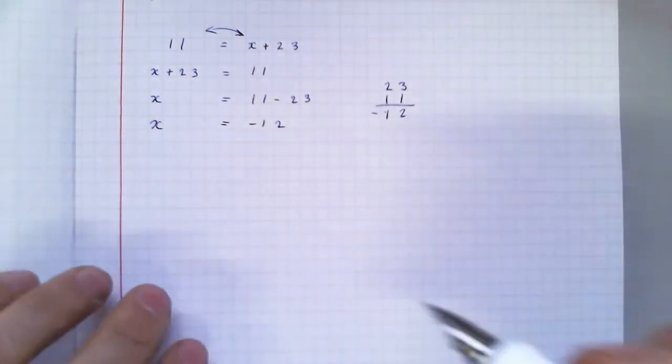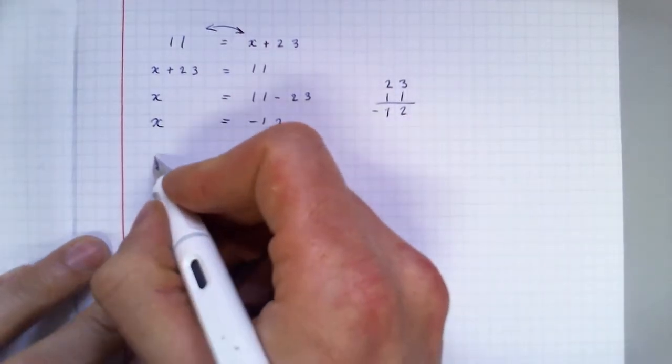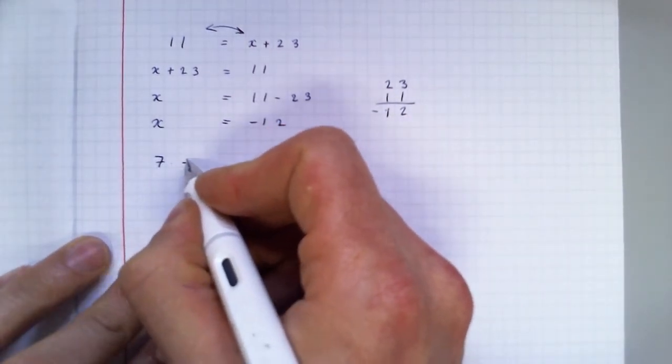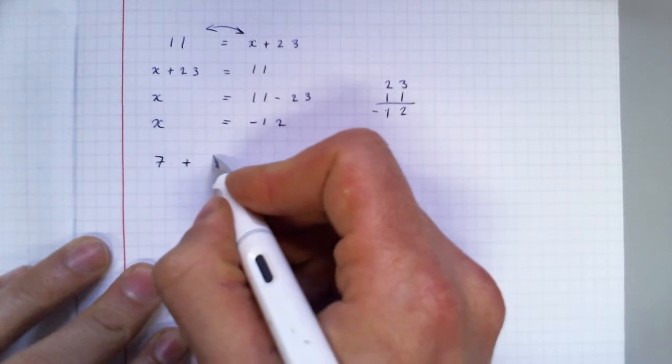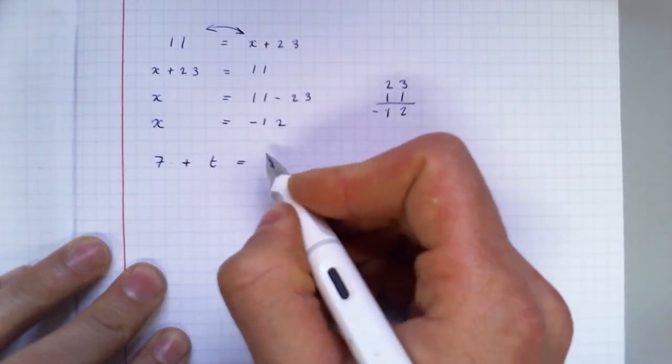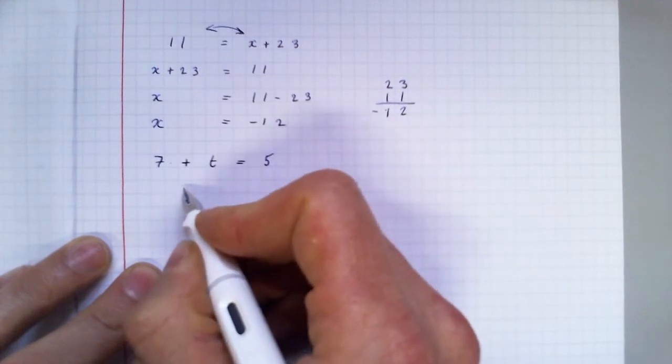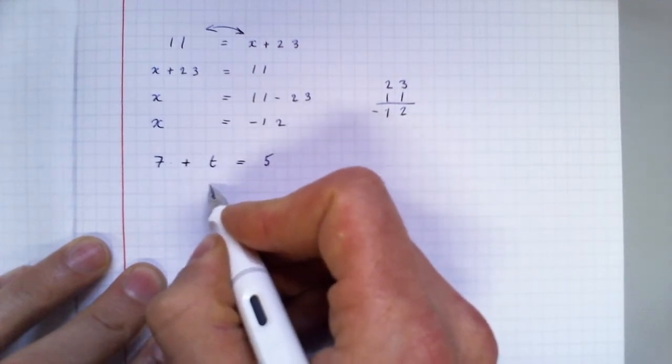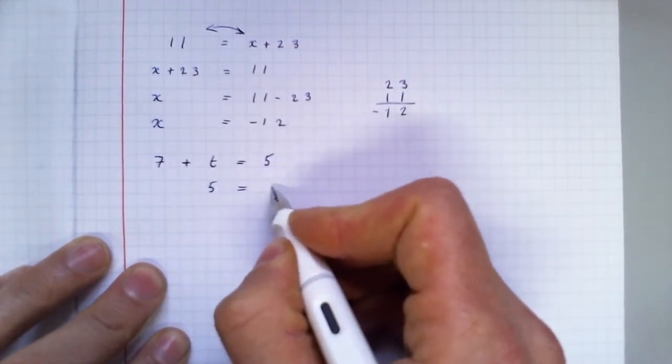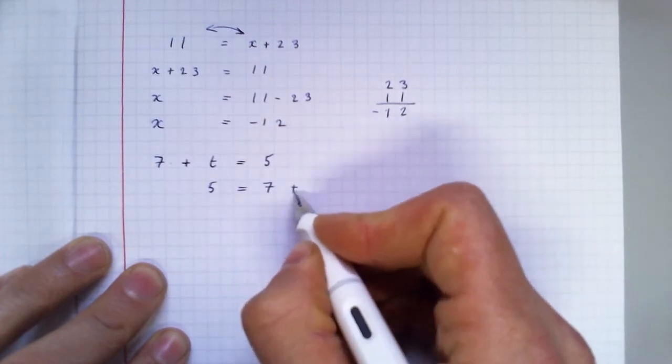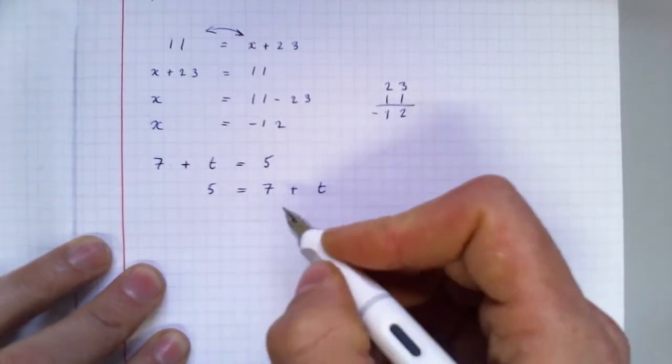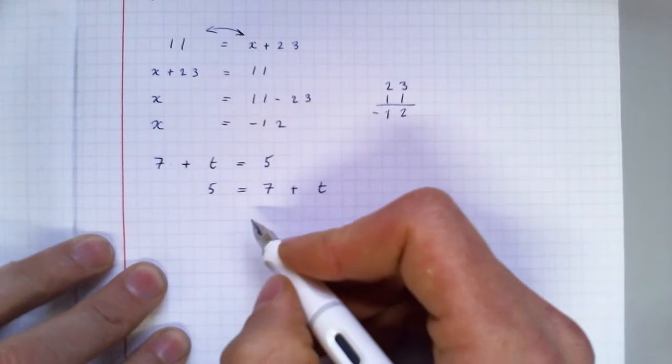Let's try another one. 7 plus t equals 5. And again, I'm going to throw it the other way around. It doesn't make a difference. 5 equals 7 plus t. I'm allowed to do that. It doesn't change the sum, but it might make it easier for you to work out.